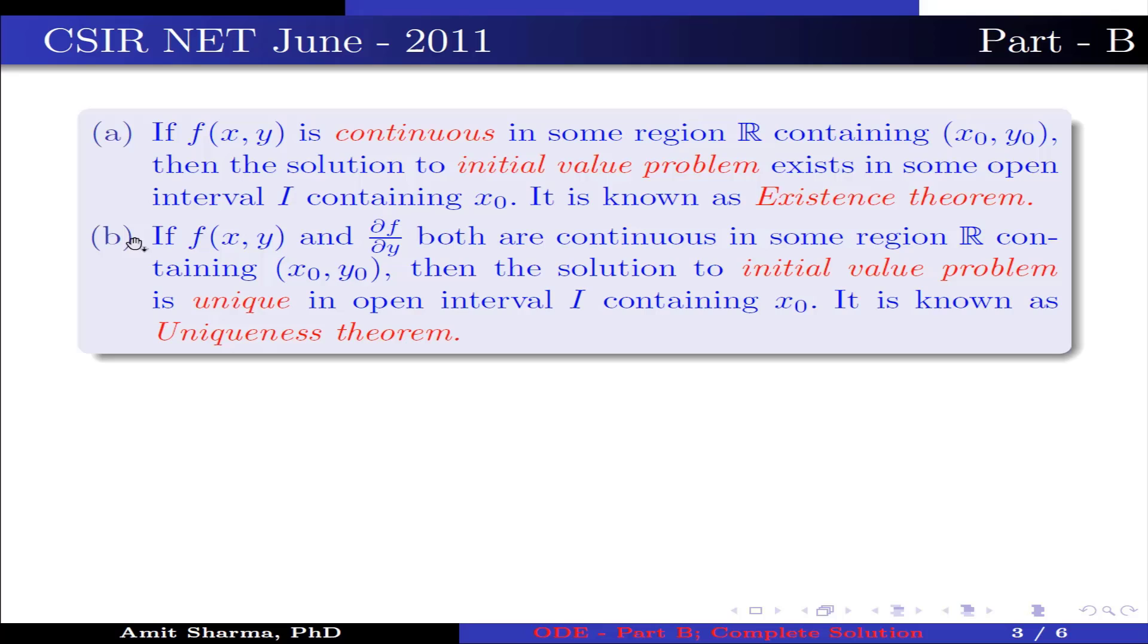Point b: if f(x,y) and ∂f/∂y both are continuous in some region R containing (x0, y0), then the solution to initial value problem is unique in open interval I containing x0. It is known as uniqueness theorem.